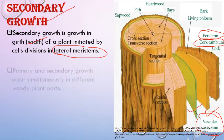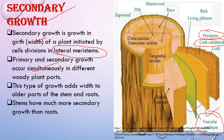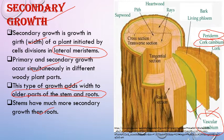Primary and secondary growth occur simultaneously in different woody plant parts. Primary growth (growth in length) and secondary growth occur simultaneously — the apical part shows primary growth while older parts show secondary growth. Secondary growth adds width to older plant parts, that is stem or root. Stem has much more secondary growth than roots because the cambium of the stem is more active compared to the cambium of roots.